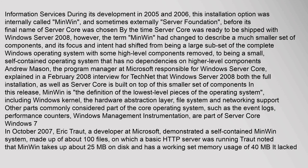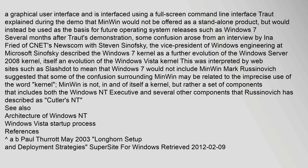In October 2007, Eric Trott, a developer at Microsoft, demonstrated a self-contained Minwin system made up of about 100 files, on which a basic HTTP server was running. Trott noted that Minwin takes up about 25 MB on disk and has a working set memory usage of 40 MB. It lacked a graphical user interface and was interfaced using a full-screen command line interface. Trott explained during the demo that Minwin would not be offered as a standalone product, but would instead be used as the basis for future operating system releases such as Windows 7.